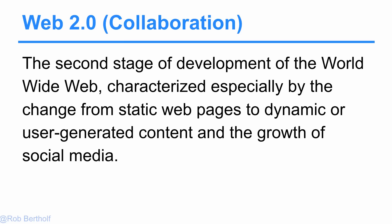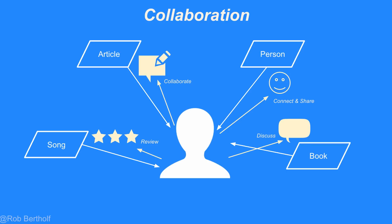As the web evolved, right around 1999 the second stage of development of the World Wide Web came about, characterized by a change from static sites to more of a growth of social media and collaboration. Now on that same song, we can write reviews; we can collaborate on an article; we can connect and share with somebody; we can discuss a book. This interaction really has taken the web to a whole other level.